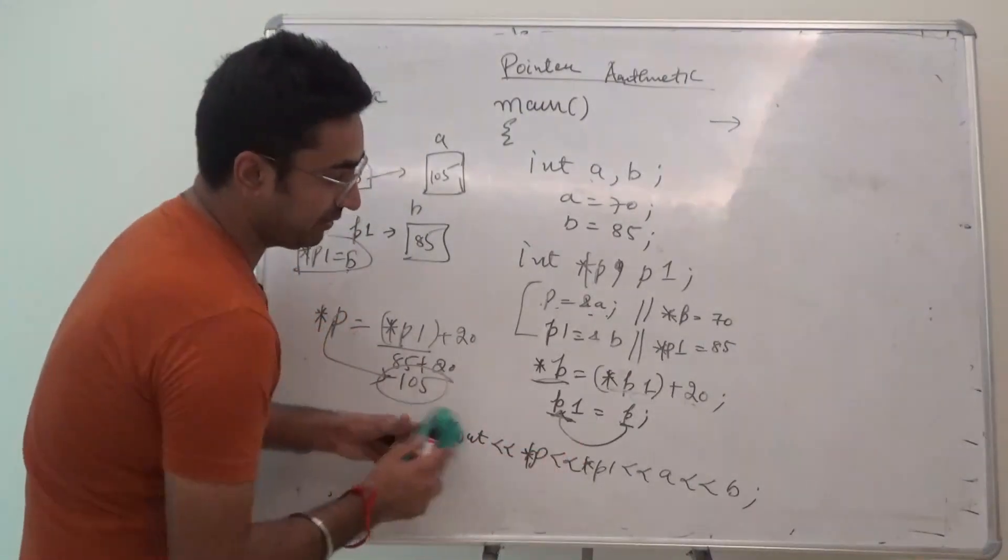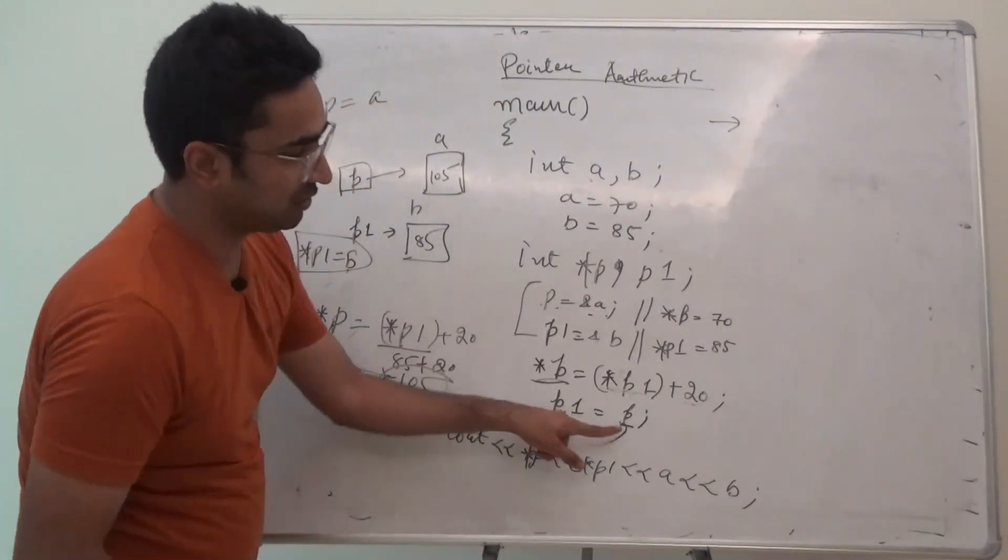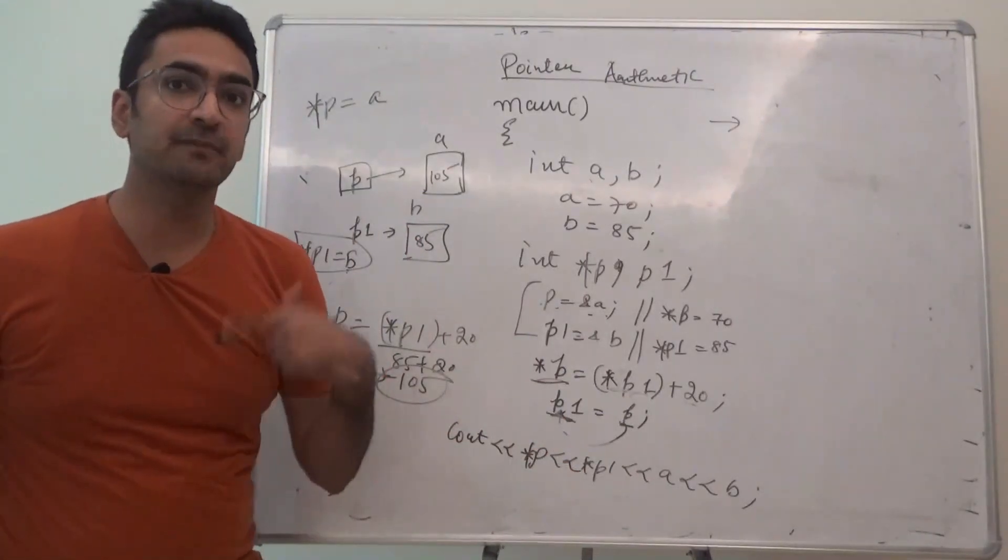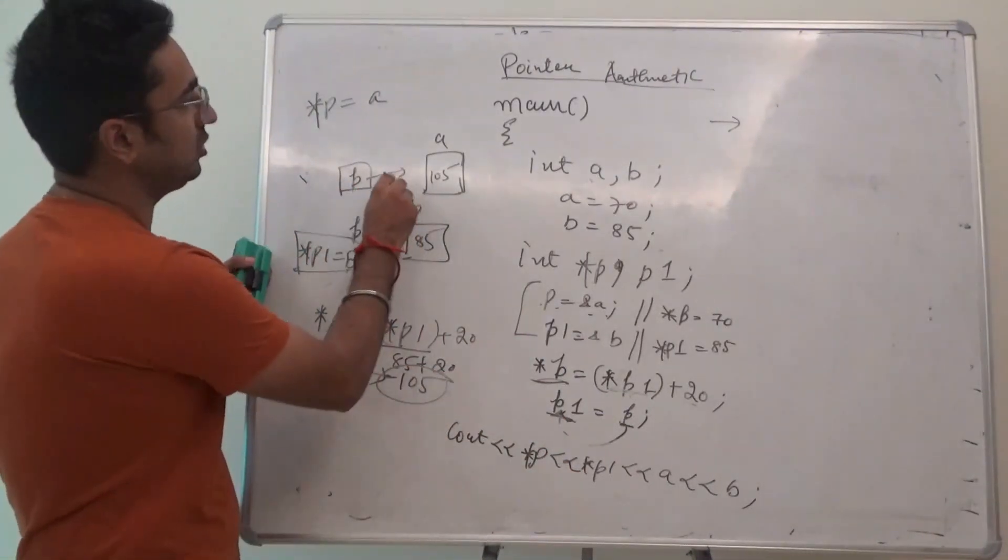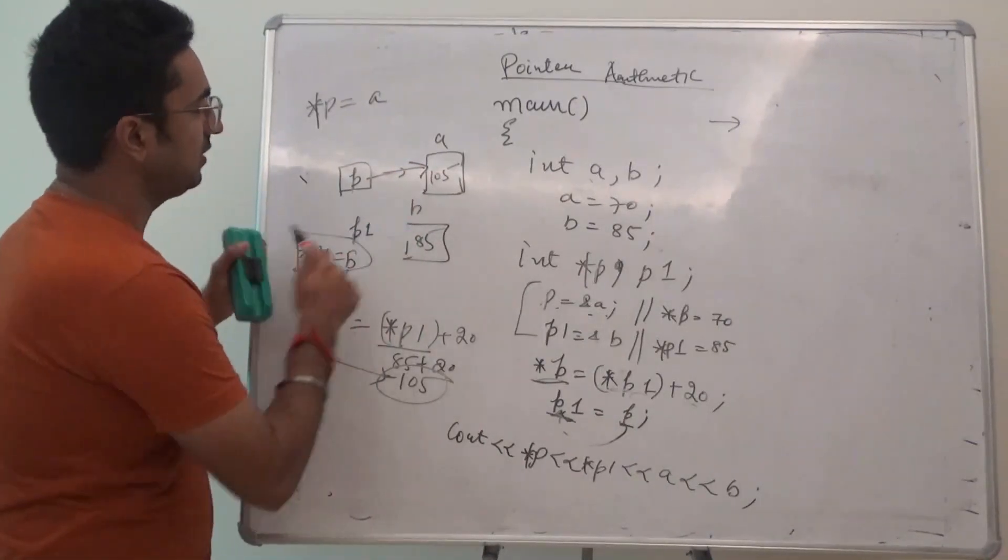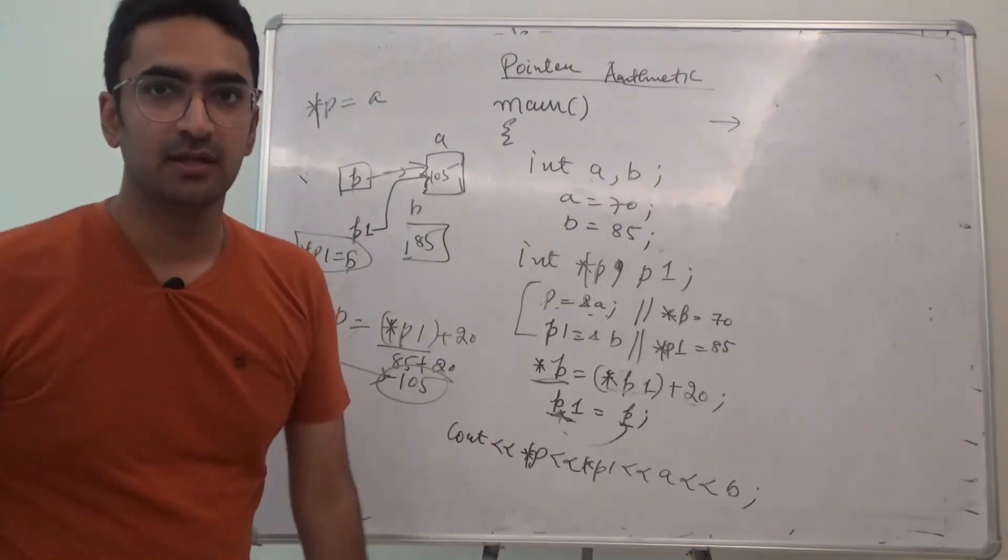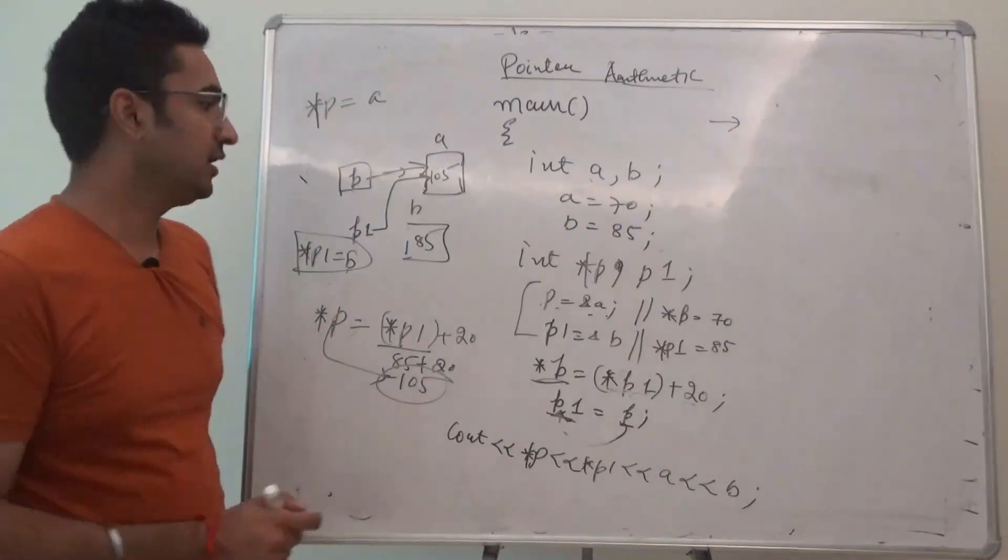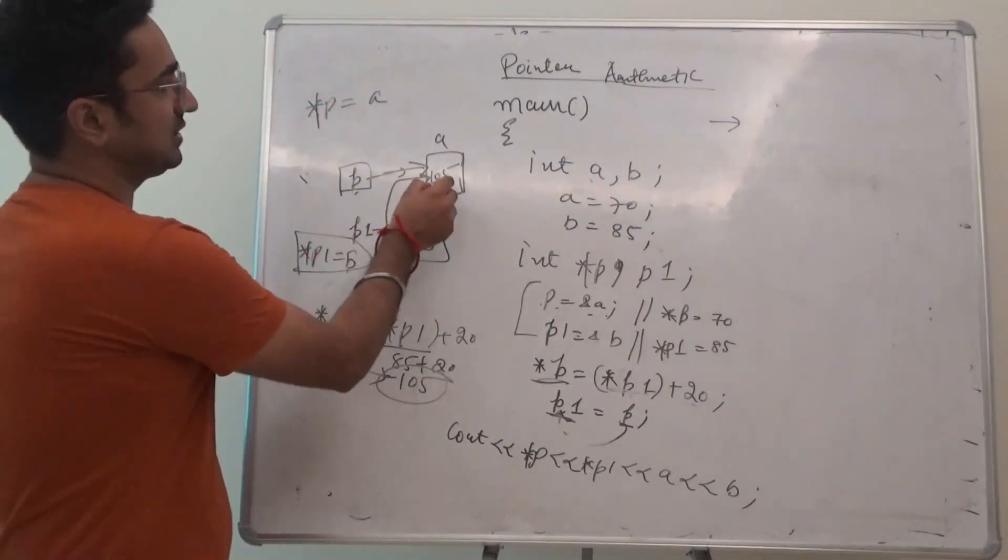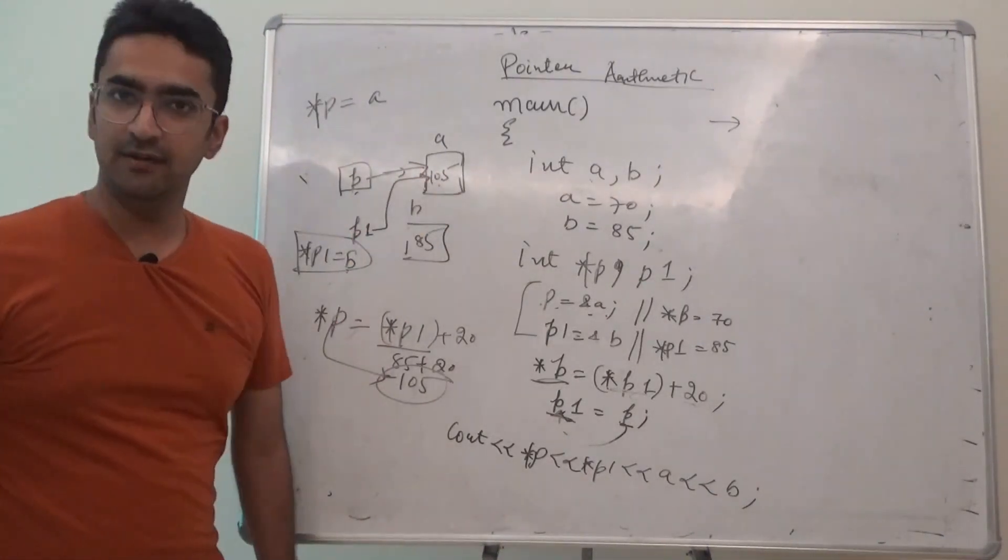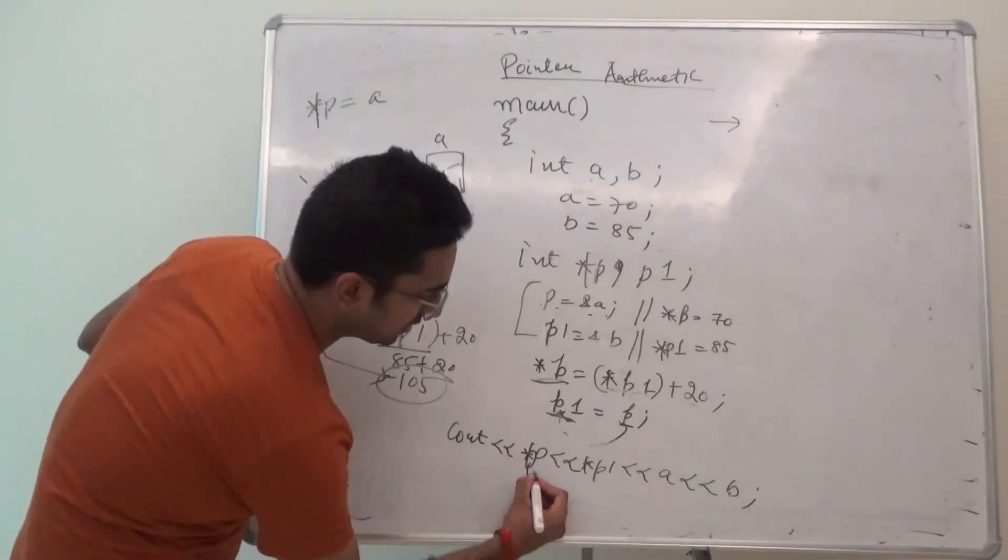Now, important point guys. p1 is equal to p. It means p1 will point where p is pointing. So, p is pointing towards this a. So, p1 will also point towards a. This is very, very, very important. So, p is pointing towards a, 105. p1 will also point towards 105.